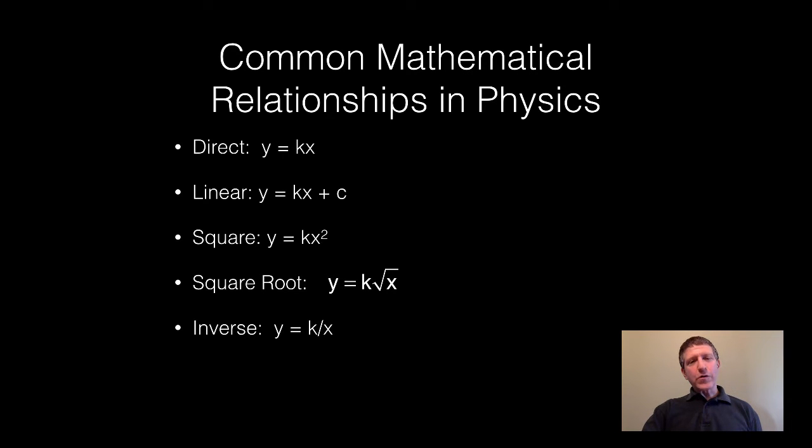Also an inverse relationship y equals k over x. Again, k not the slope in this case. And finally we could have an inverse square relationship y equals k over x squared. I'll also briefly mention exponential relationships in this video.